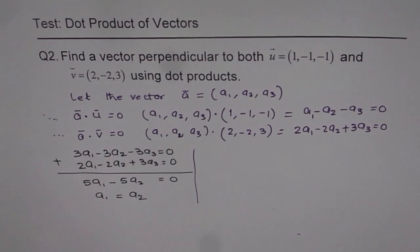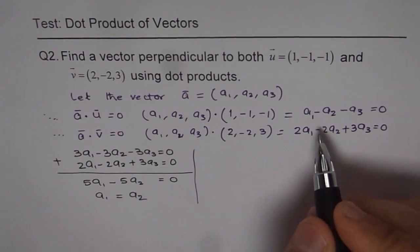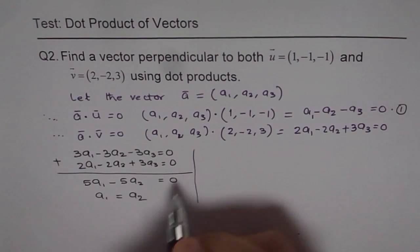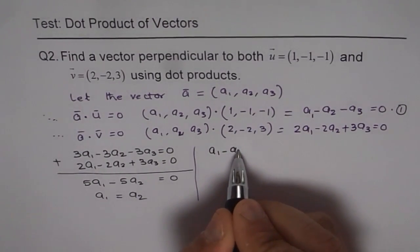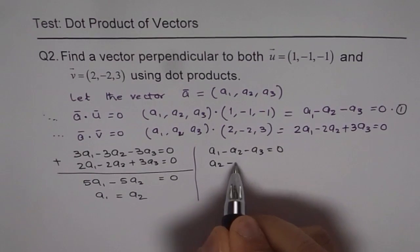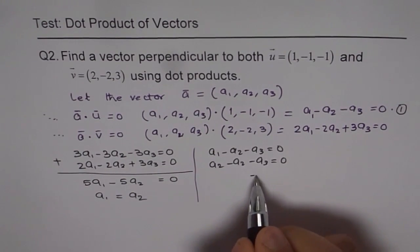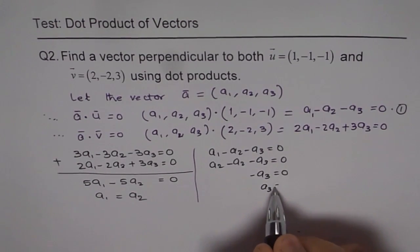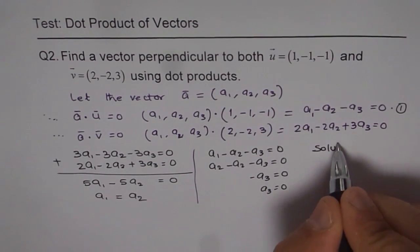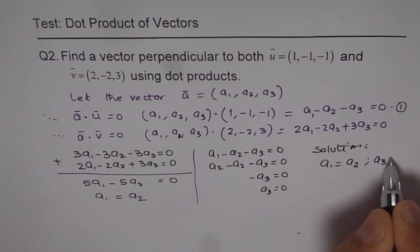Now let's plug this into one of our equations and find what a3 is. If a1 equals a2, then I'll write a2 in place of a1 in the first equation: a2 minus a2 minus a3 equals zero. Now a2 minus a2 is zero, so we get minus a3 equals zero, or a3 equals zero. So the solution is a1 equals a2 and a3 equals zero.